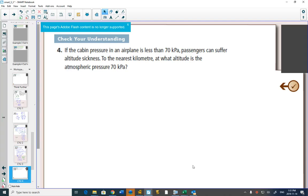Last question from this section. If the cabin pressure in an airplane is less than 70 kilopascals, passengers can suffer altitude sickness. To the nearest kilometer, at what altitude is the atmospheric pressure 70 kilopascals?